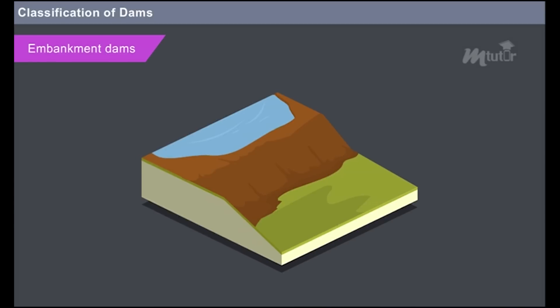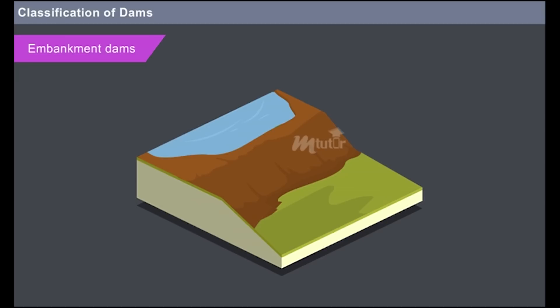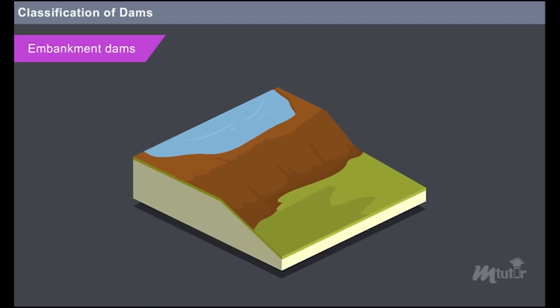The dams which are constructed with non-rigid materials like earth fill or rock fill are known as embankment dams. Moving on, let us learn the different types of dams constructed for diverse purposes.